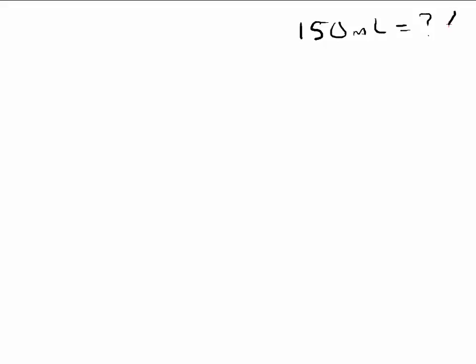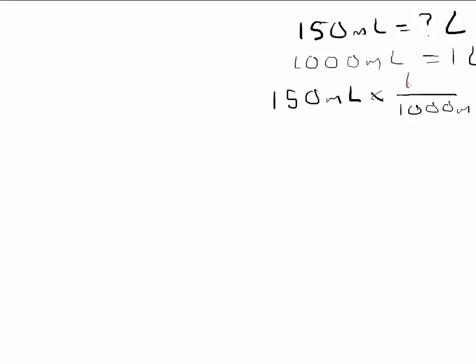The first conversion: 150 milliliters to liters. One way is to recognize that milli means one thousandth, so there are 1,000 milliliters in one liter. That sets up a conversion factor: put 150 mL on top and 1,000 mL on the bottom, effectively dividing by 1,000 — moving the decimal three spots to the left. So 150 milliliters equals 0.15 liters. We keep two significant figures, matching the original.